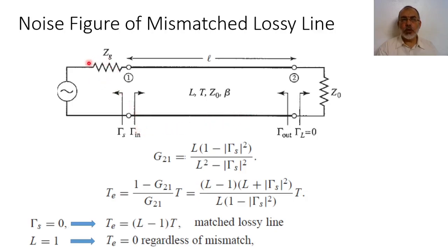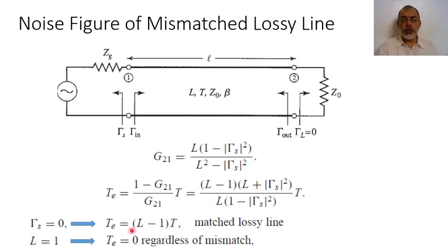This is the equivalent noise temperature for a lossy transmission line that is mismatched with the source. As a limiting case, if the lossy transmission line is matched to the source, meaning Zg = Z₀ and γs = 0, the equivalent noise temperature becomes Te = (L − 1) · L / L · T = (L − 1) · T. This is exactly the same value obtained previously for a lossy transmission line connected to a matching load.